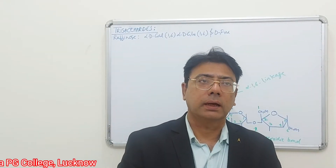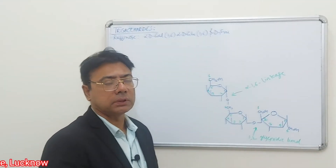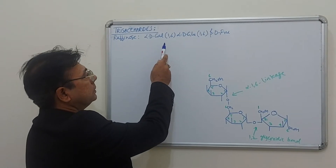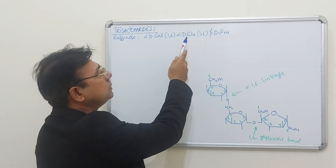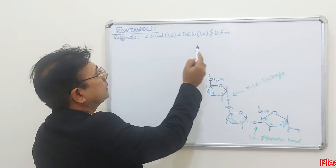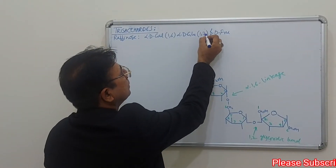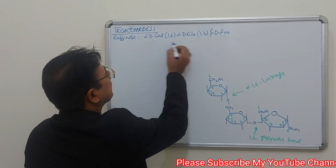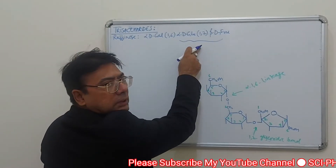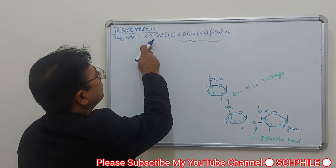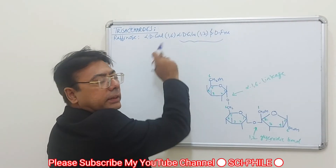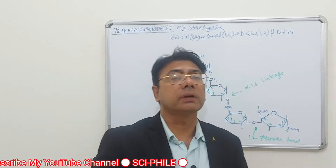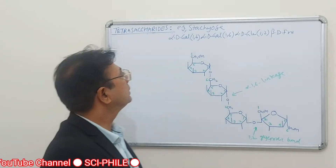From trisaccharides, the example is raffinose, a three-unit sugar having alpha-D-galactose bonded to alpha-D-glucose through a 1,6 linkage, which in turn is bonded to beta-D-fructose through a 1,2 glycosidic linkage. As you can see, this 1,2 portion is simply sucrose — so raffinose is essentially sucrose with galactose added through a 1,6 linkage.